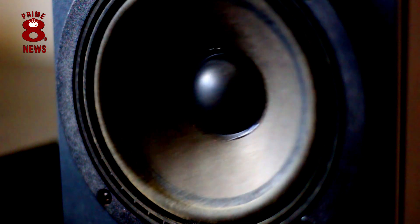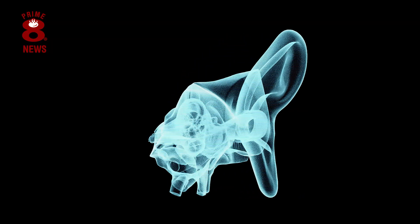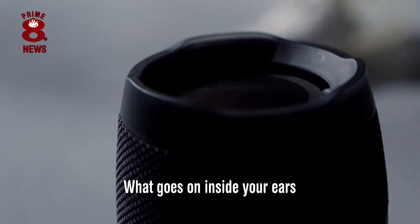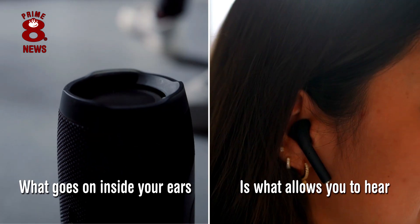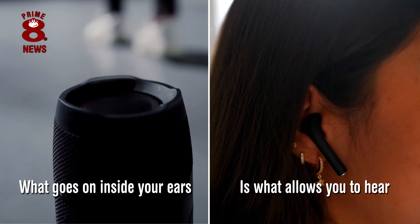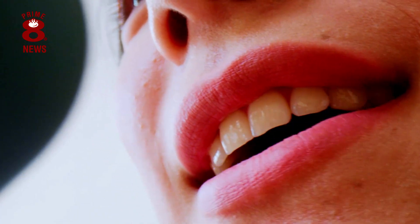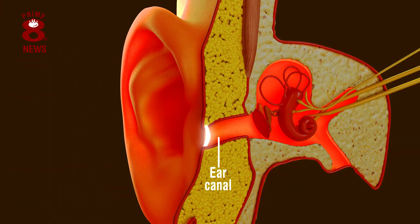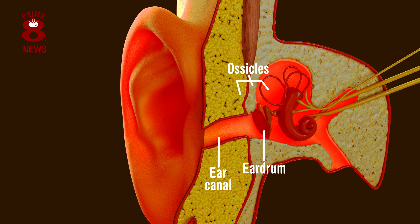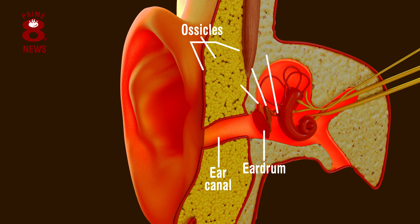Before you can understand sound, it is essential to know how your ears function, as what goes on inside your ears is what allows you to hear in the first place. If we take the example of a person talking, the movement of their mouth creates waves of moving air. These sound waves then travel into your ear canal and hit your eardrum. This in turn causes the ossicles to vibrate, which consists of three small bones, known as the malleus,